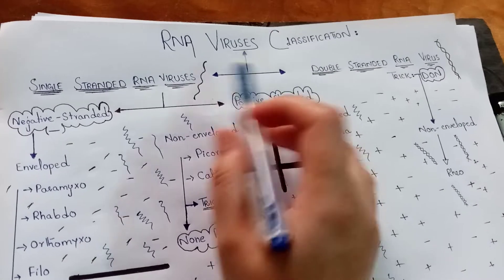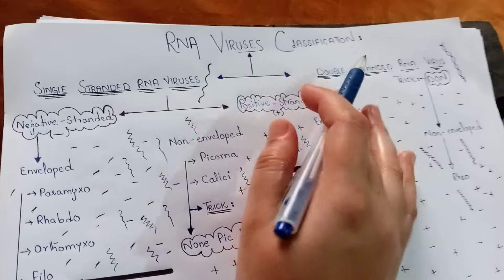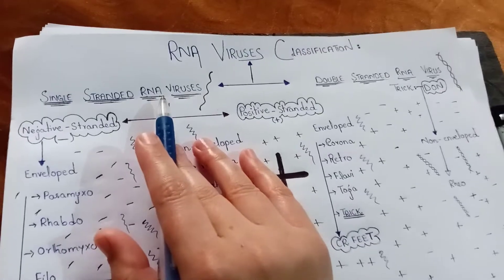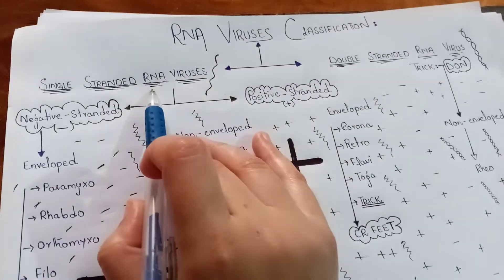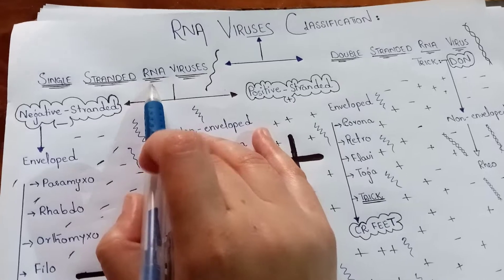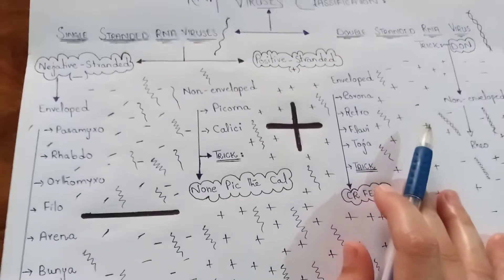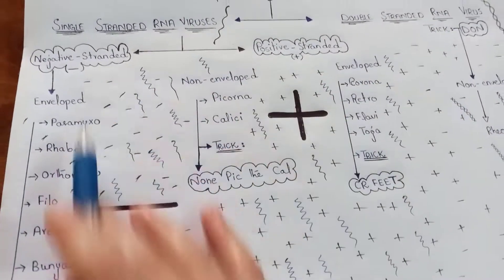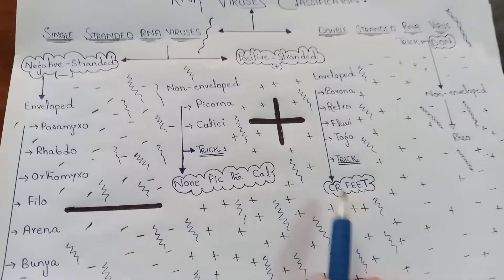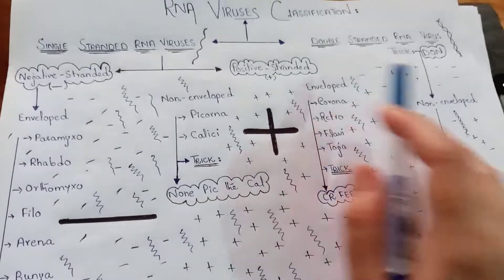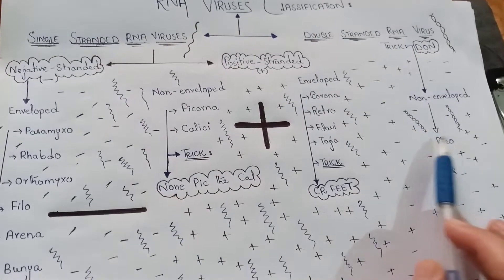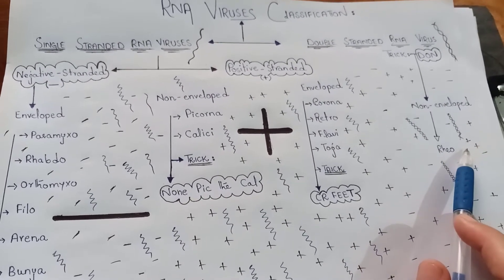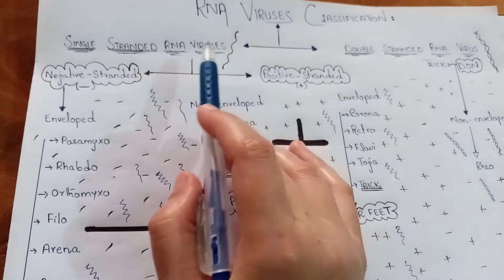RNA viruses are classified as single stranded RNA viruses and double stranded RNA viruses. Most of the RNA viruses are single stranded RNA viruses. You can see over here there are many single stranded RNA viruses, while there is only one double stranded RNA virus, and that is Reo. So Reo is the exception — it is the only double stranded RNA virus.